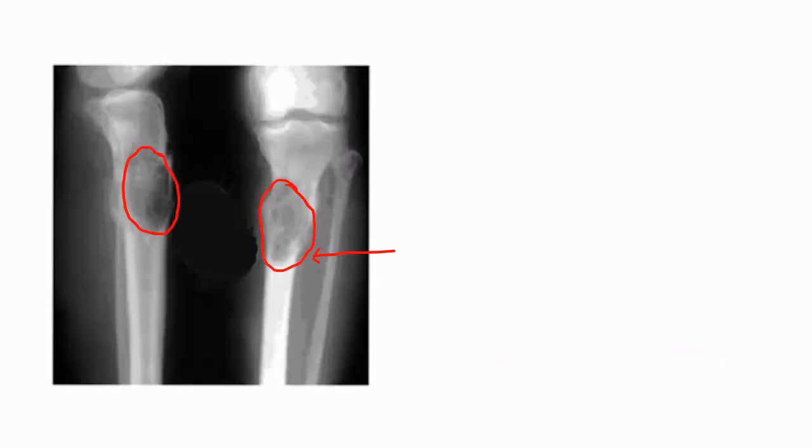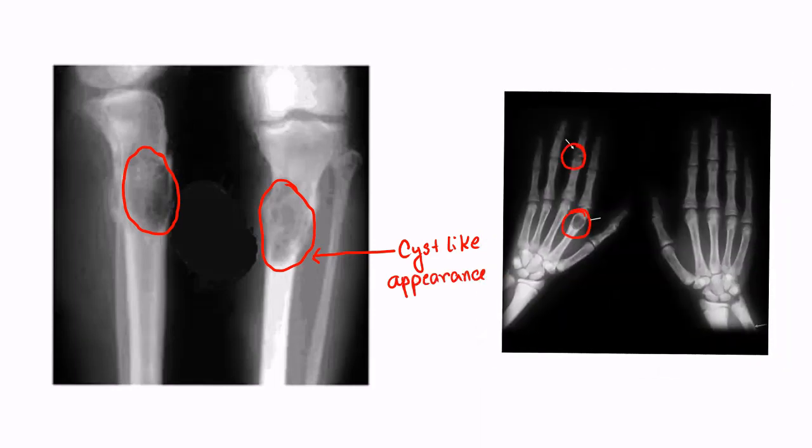In the X-ray plate, you can see this cyst-like structure in the bone. These are called brown tumor.